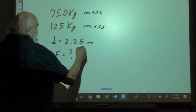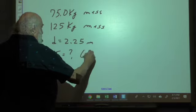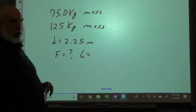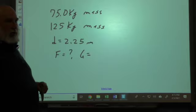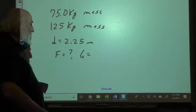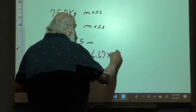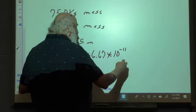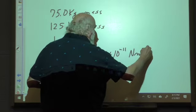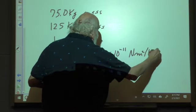Well, for G we need to know the constant. G, as we calculated and as the proof would be confirmed hundreds of years later, is 6.67 times 10 to the negative 11 newton meter squared per kilogram squared.